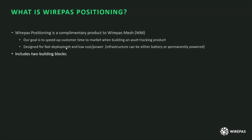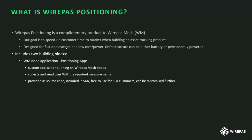There are two building blocks inside Wirepass Positioning. The first is the node application, what we call the positioning app. This is a custom application designed to run on the Wirepass mesh node. It will collect the required measurements and send them over the mesh. The application is provided at source code level, included in our SDK. It is free to use for our SLA customers and can be further customized by the customer, as many have done already.